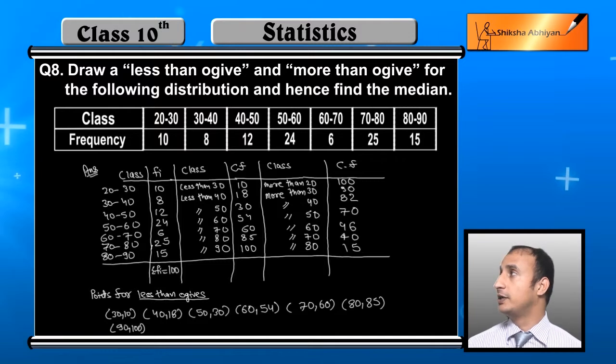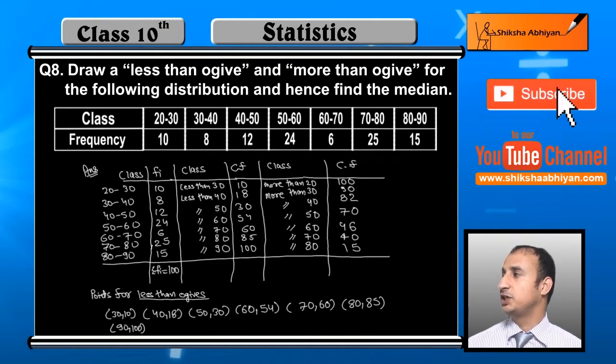First of all, we have already written data. So if I look at class frequency: 20 to 30 is 10, 30 to 40 is 8, 40 to 50 is 12, 50 to 60 is 24, 60 to 70 is 6, 70 to 80 is 25, 80 to 90 is 15.